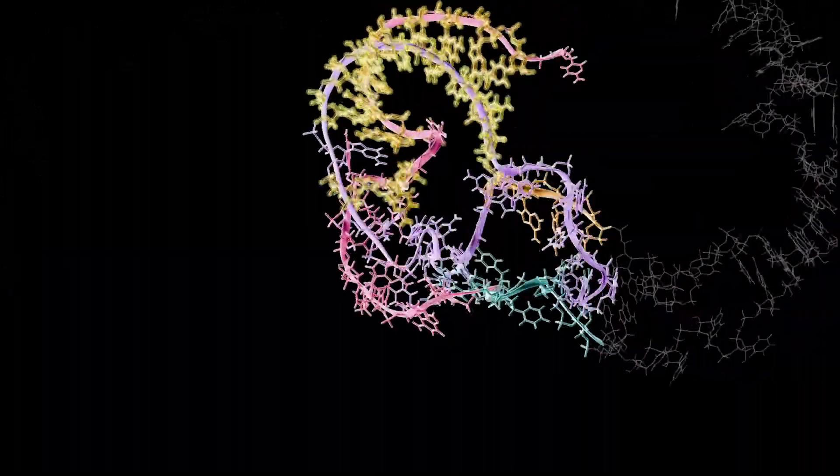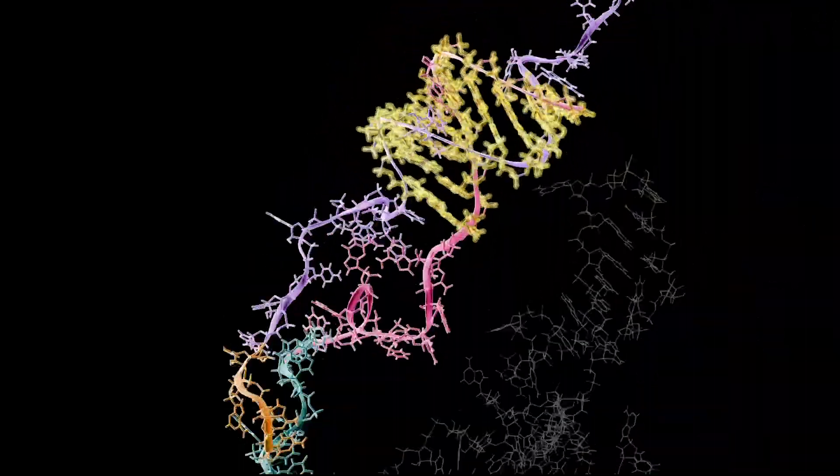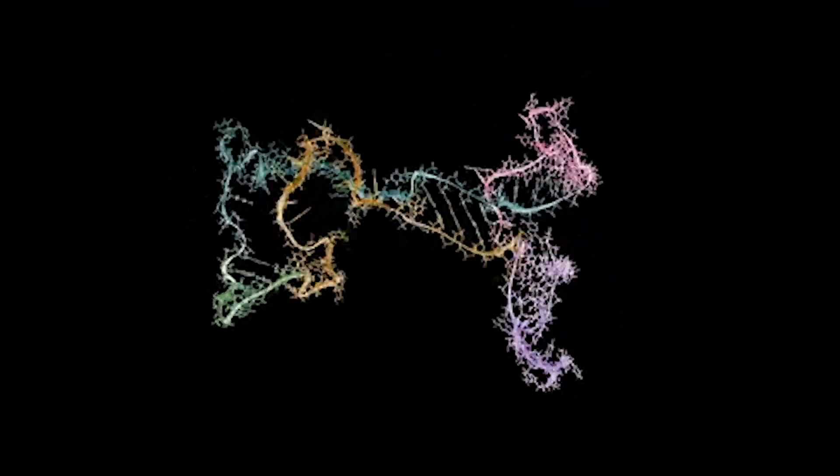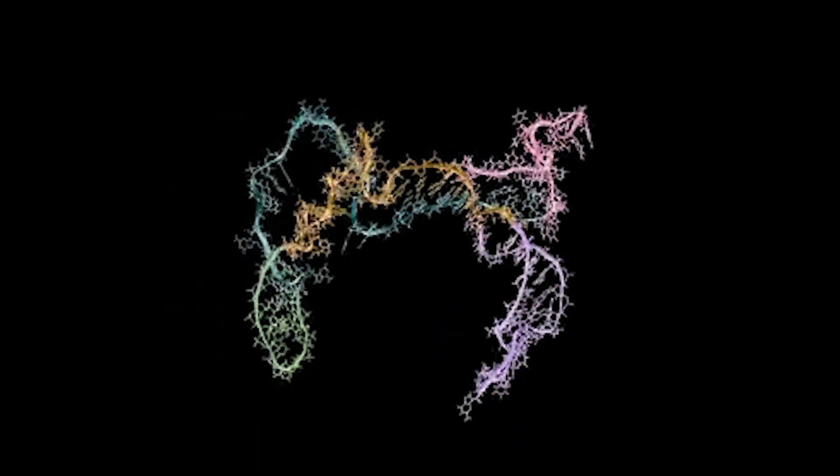To function properly, the RNA must eventually fold into a final three-dimensional shape, but on the way it ties itself in crazy complex knots. Some of these knots don't fit in the final shape, and if they don't untie, the RNA won't work.